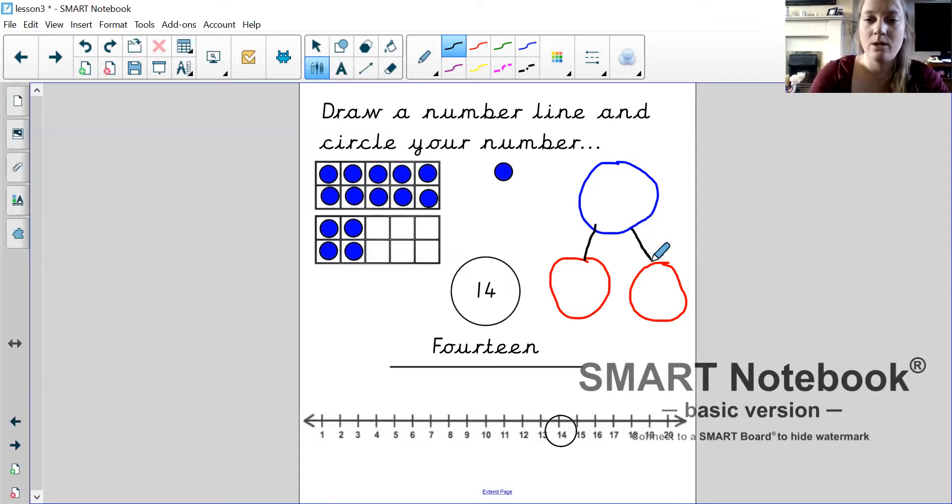So I have one whole and two parts. Now the number that I am doing is number 14, so I'm going to show 14 on my part-whole model. 1, 2, 3, 4, 5, 6, 7, 8, 9, 10, 11, 12, 13, 14. I have 14 in my whole. 14 is the whole.